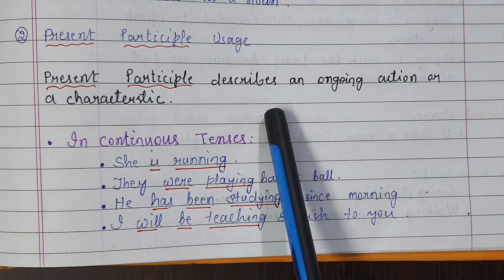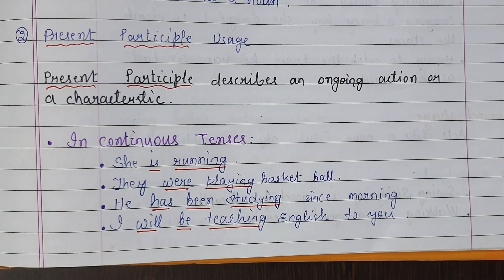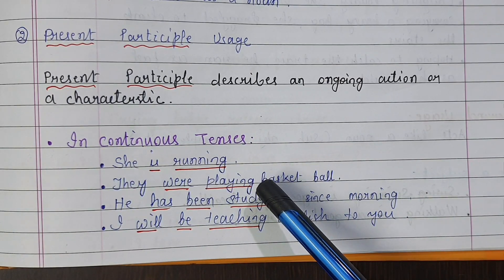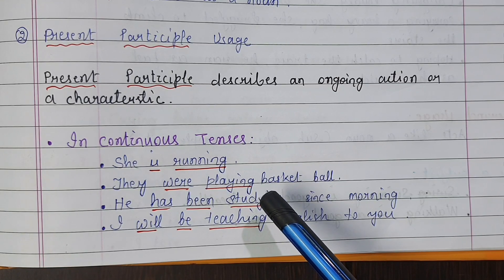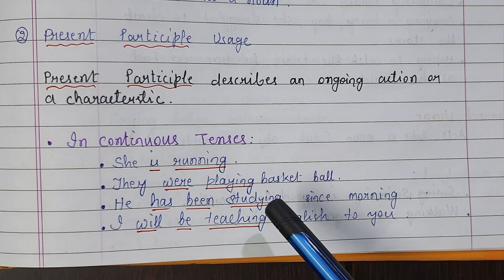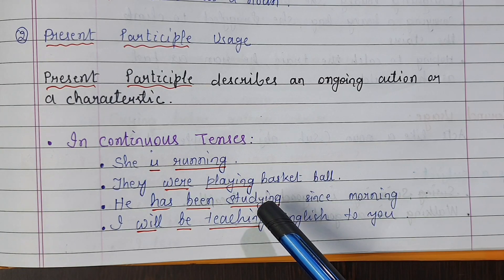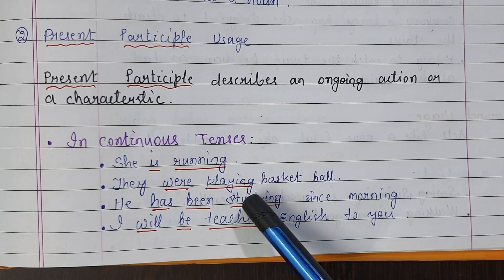Present participle describes an ongoing action or a characteristic. For ongoing actions, we use it in continuous tenses: present continuous, present perfect continuous, past continuous, past perfect continuous, future continuous, and future perfect continuous. That means in six tense forms, we use present participle.